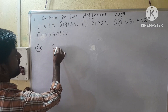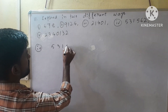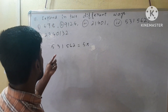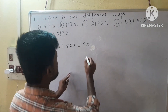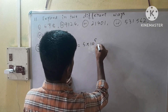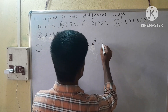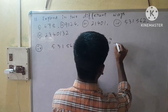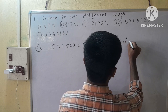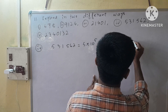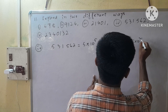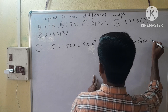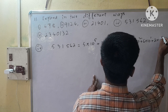Roman number 4 is 5, 3, 1, 5, 6, 2. So 5 into 10 to the power 5 (after 5 we have 5 digits), plus 3 into 10 to the power 4 (after 3 we have 4 digits), plus 1 into 10 to the power 3, plus 5 into 10 to the power 2, plus 6 into 10 to the power 1, plus 2 into 10 to the power 0.